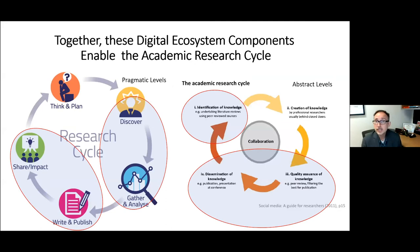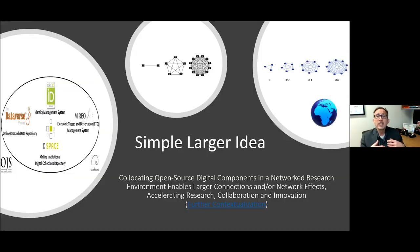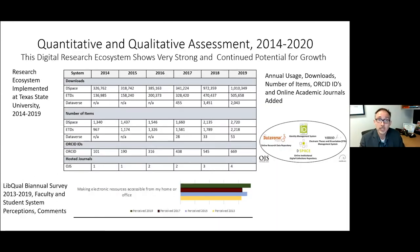Together, these digital ecosystem components enable the academic research cycle. On abstract levels, this has to do with the quality assurance and dissemination of knowledge. On pragmatic levels, this has to do with the discovery, gathering, and analysis of research, and the writing, publishing, sharing, and impact of research. The larger idea is that co-locating open source digital components in a network research environment enables larger connections and network effects, accelerating research, collaboration, and innovation.